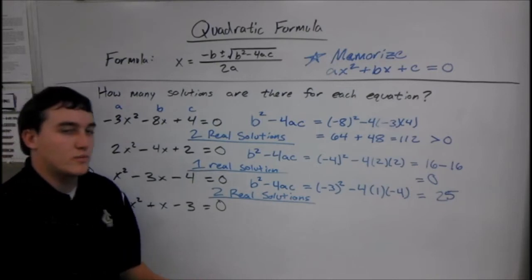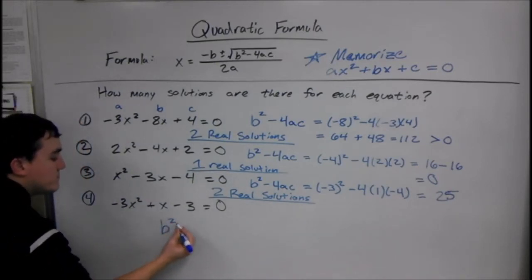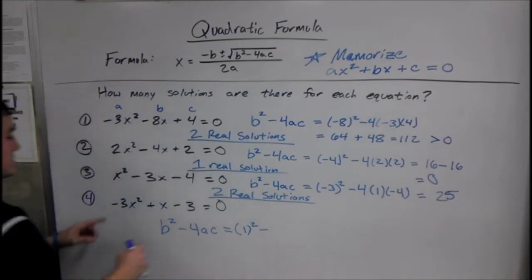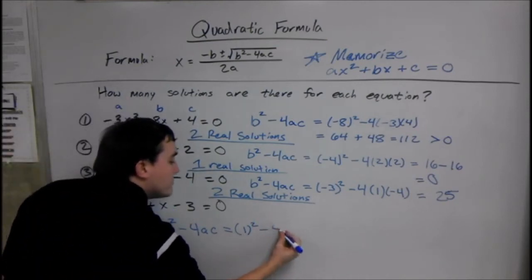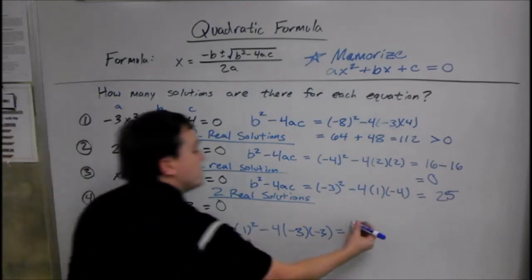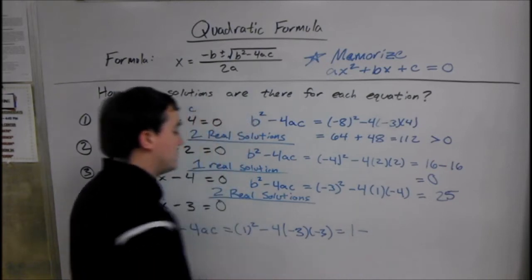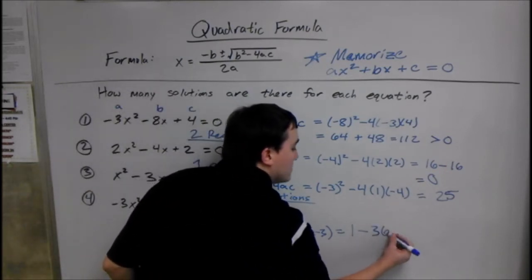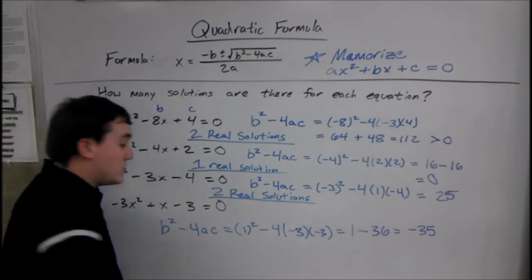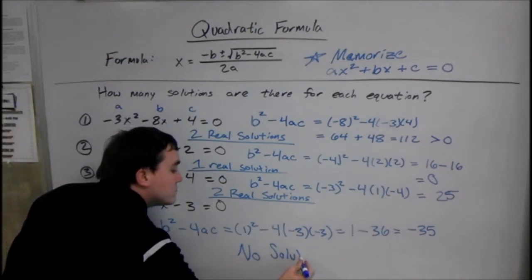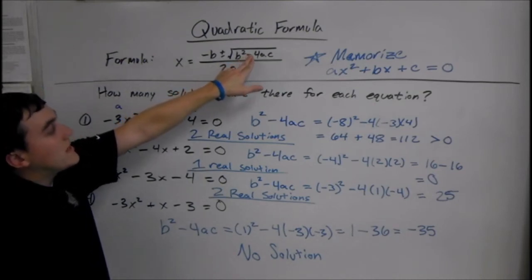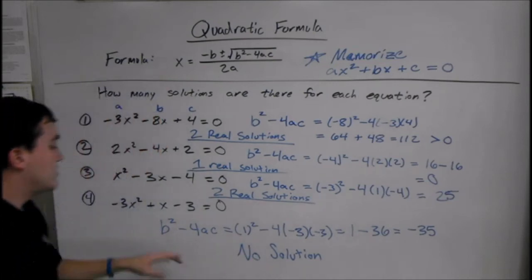And the last one, just for the determinants — same thing. b squared minus 4ac equals 1 squared minus 4 times negative 3 times negative 3. That would be 1. We have 3 negatives, so it makes it negative — minus 4 times 3 times 3, that's 9 times 4, that's 36. So here we have negative 35, which gives us no solution. The reason we say no solution is because that gives us an imaginary number — it's a negative under a square root. You can't have a negative under a square root, so no solutions from this equation.